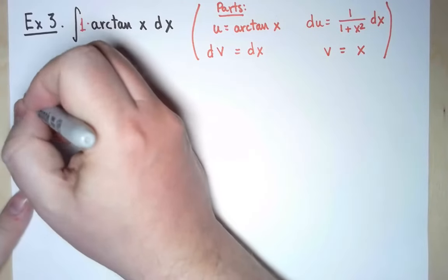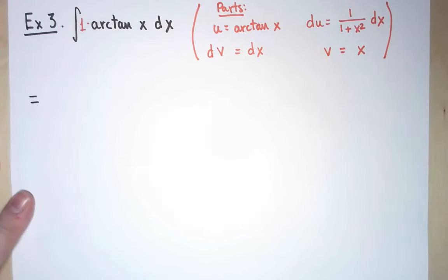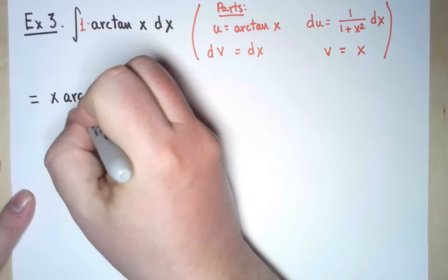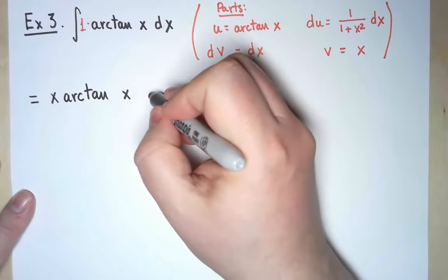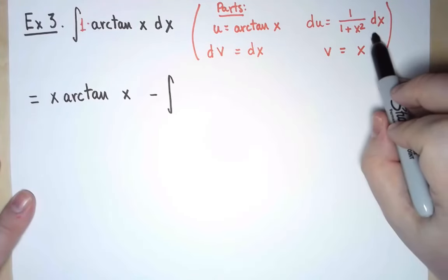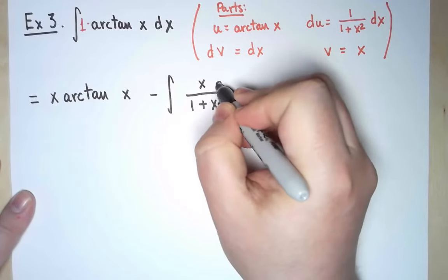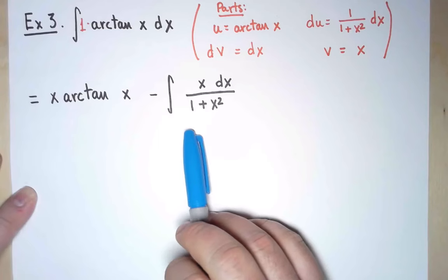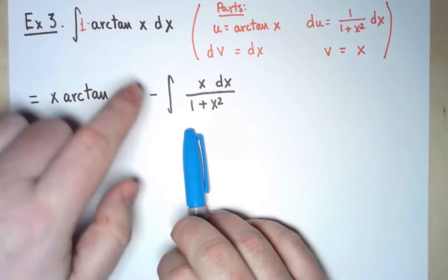My integral becomes, using integration by parts, u times v, that's x arctan x, minus the integral of v du, that is x over 1 plus x squared dx. Excellent! Arctan is gone! I think this was a good trade-off.